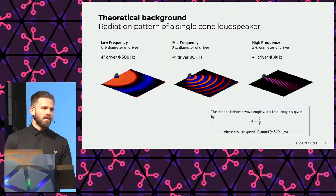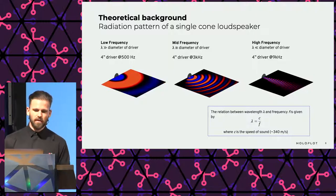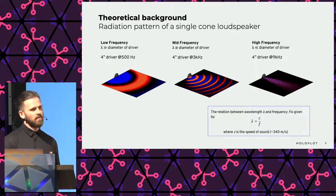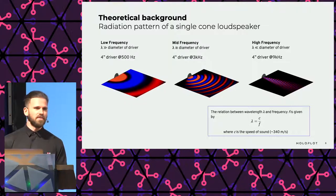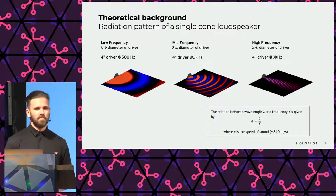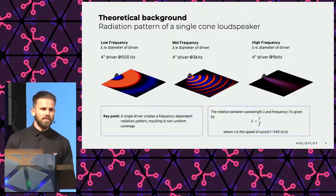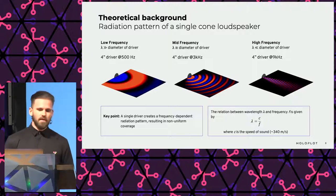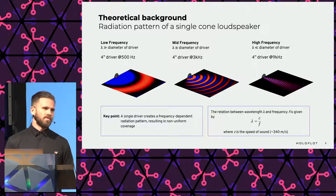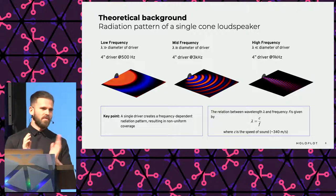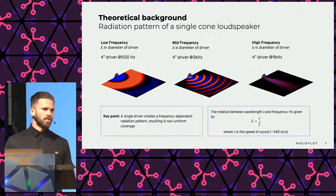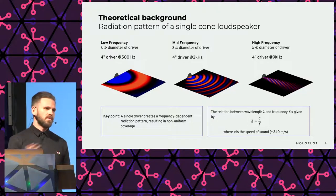The relationship between wavelength and frequency is given by the formula λ = c / f, where λ is the wavelength, c is the speed of sound — typically 340 meters per second — and f is the corresponding frequency. As a summary: a loudspeaker has a directivity pattern that looks different for all different frequencies. As a consequence, if you are on-axis, listening right in front of the loudspeaker, you will hear all frequencies at more or less the same level, but if you move sideways, you will experience different levels between the low and high frequencies.